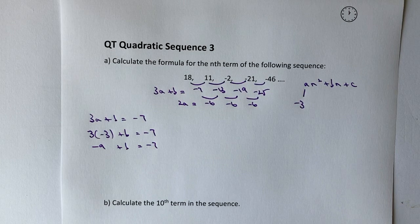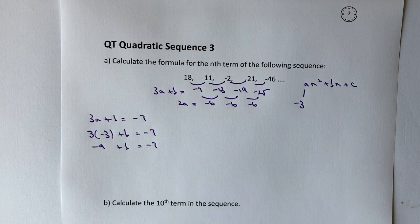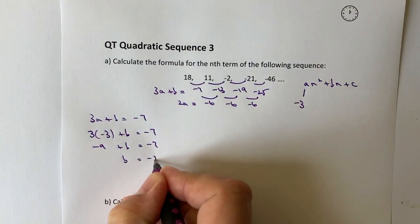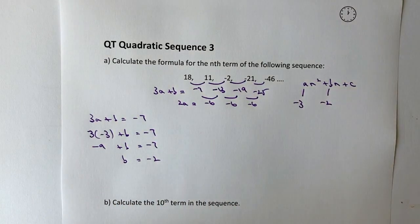Now in order to solve this I need to add 9 to both sides. If I add 9 to both sides, I'm going to get b equals minus 2. So this value here will be minus 2.